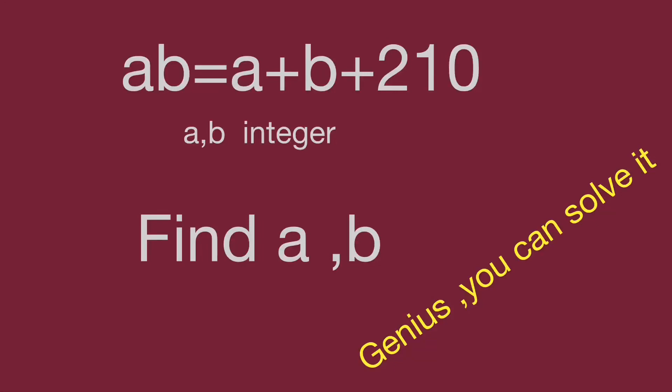Hello, you are watching Bala Hippo Math Genius Readdle. The equation is a × b = a + b + 210, where a and b are integers. Find the value of a and b. Can you find it? Pause the video and give yourself a try. Keep watching the video to find the result.